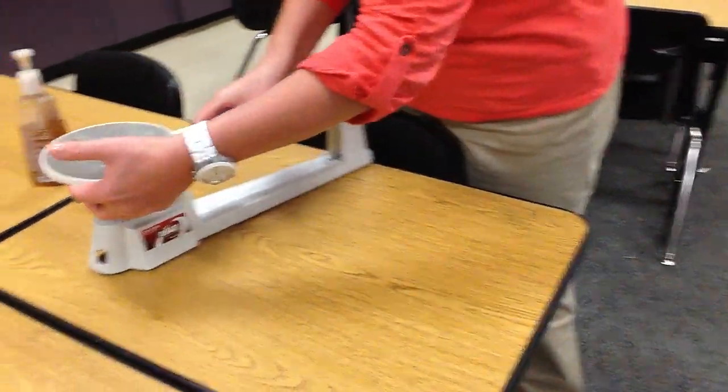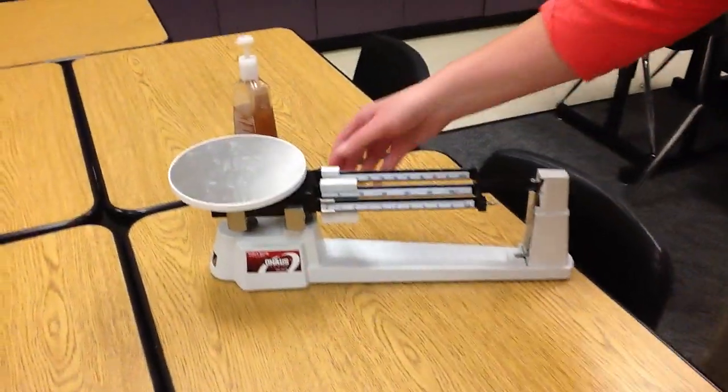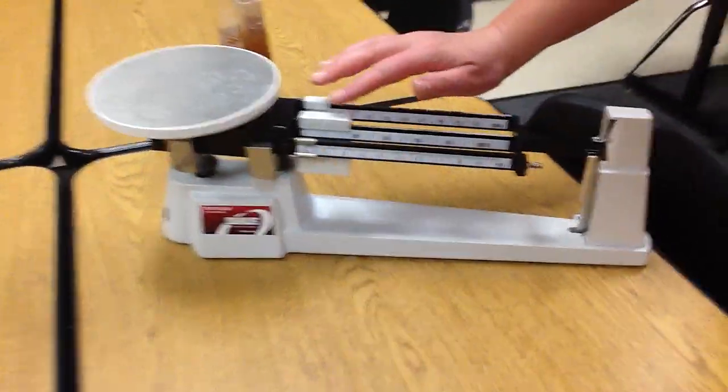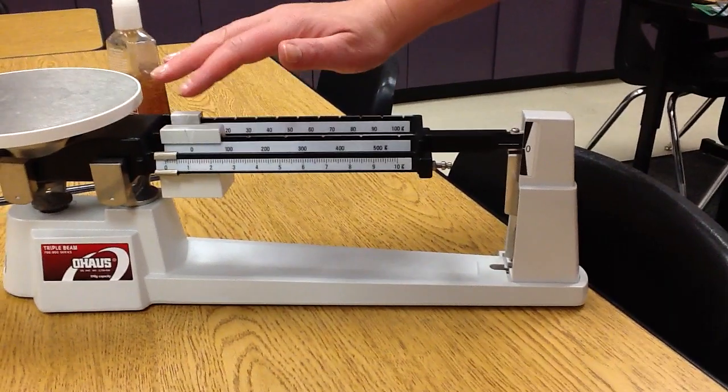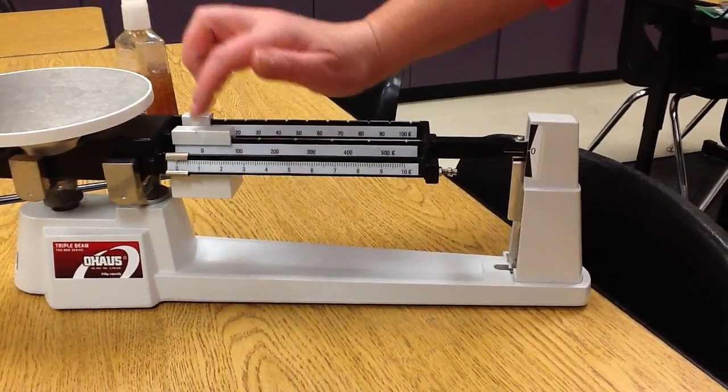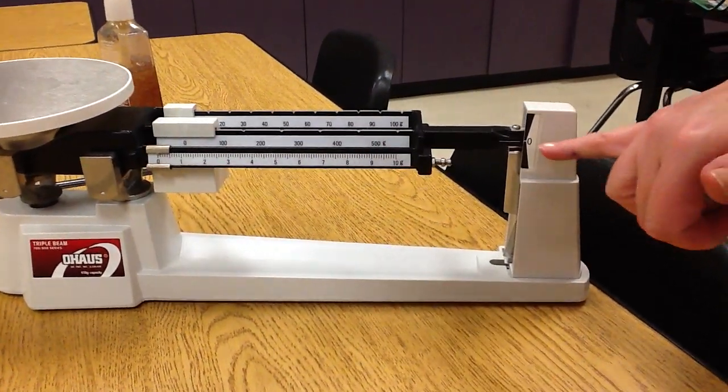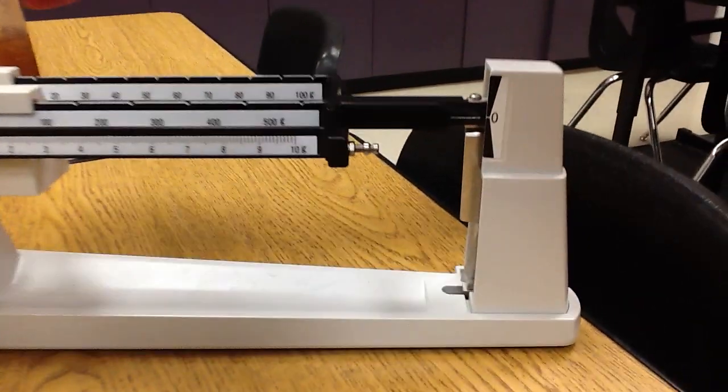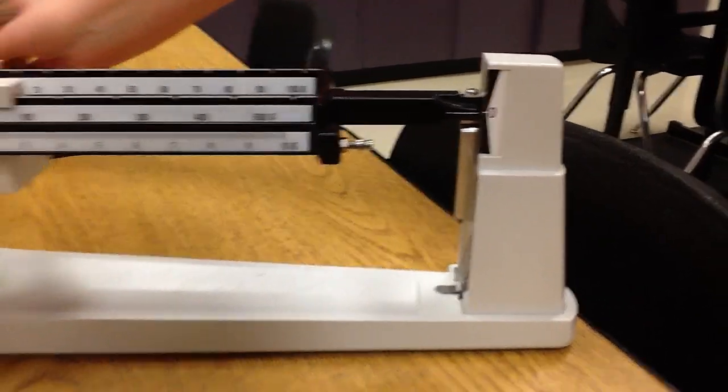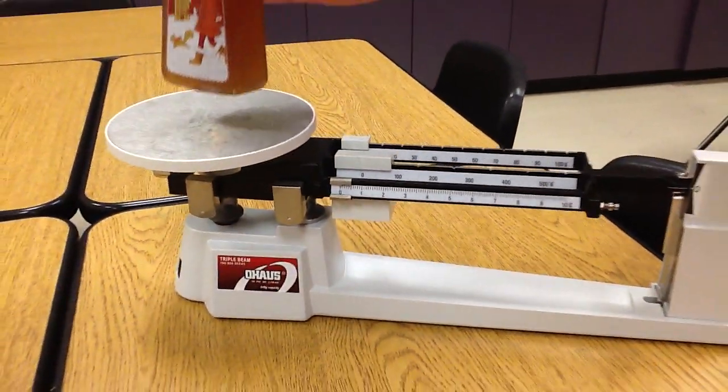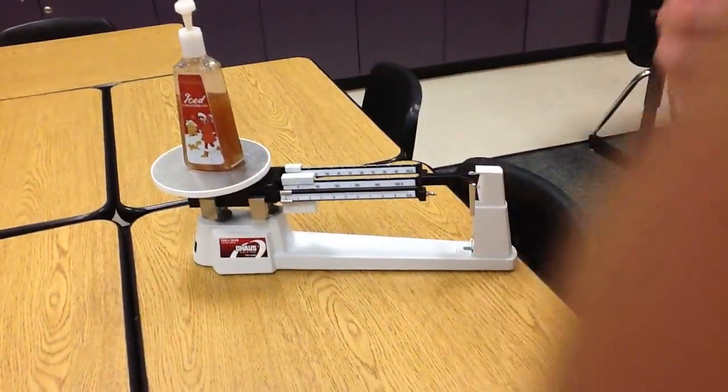So we're going to carefully put it down. And now we're going to make sure it's zeroed out. So the first thing before we do any balance, we make sure it's zeroed out on our one grams, our 100 grams, and our 10 grams. It looks pretty good to me, I don't need to touch the knob. What I am going to do now is I'm going to place my object to be measured to find the mass. Remember, we're finding the mass.